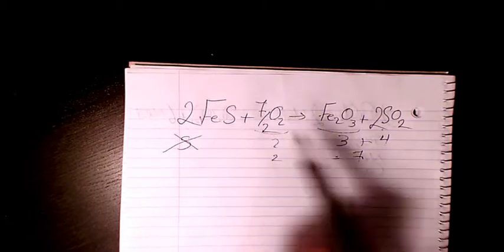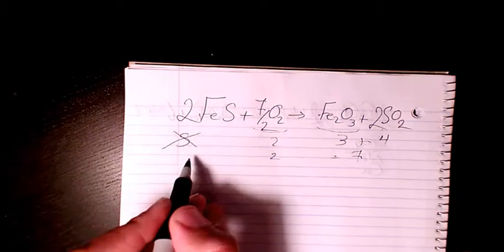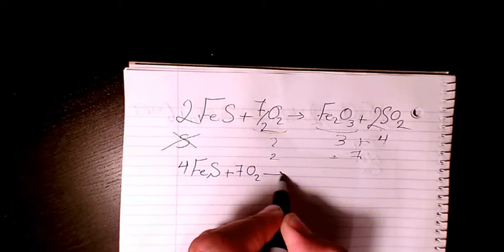So in order to get rid of this fraction, we need to multiply everything by two. So I write 4FeS + 7O2 gives 2Fe2O3 + 4SO2.